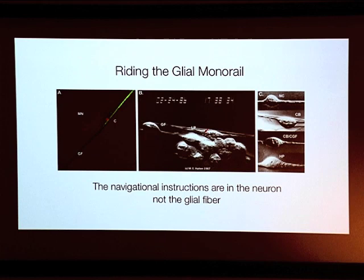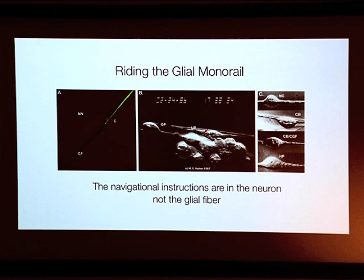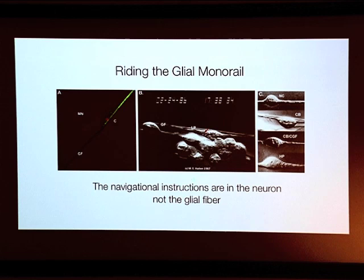We did many experiments on migration over the years, taking neurons from one region of the brain on a walk on glia from other regions, asking very basic questions: where's the information? Is it in the young neuron or in the glial fiber? What we found was that the information was indeed in the neuron, not in the glial fiber. The glial fiber was really something like a monorail on which the neuron would do this specialized form of motility — rather like neurons driving on the interstate highway system where the navigational instructions, that is the genes, are in the neuron.